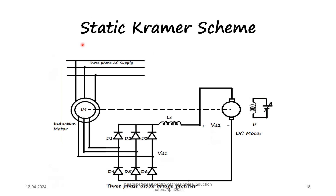The static Kramer scheme converts the rotary slip power to DC using a diode bridge. This DC power is fed to a DC motor which is mechanically coupled with the induction motor, and speed control is done by varying the field current of the DC motor. For large speed range applications, the diode bridge is replaced by a thyristor bridge and speed is controlled by varying the firing angle of the bridge. The speed in that case can be controlled up to the standstill condition.